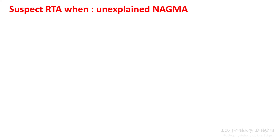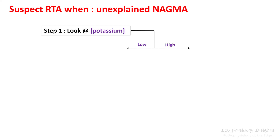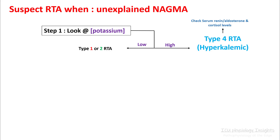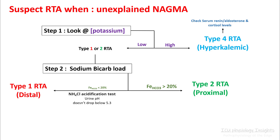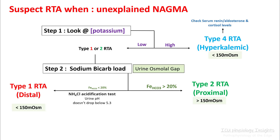Suspect renal tubular acidosis when you have an unexplained non-anion gap metabolic acidosis. Step one is to look at potassium. If potassium is high, you are dealing with hyperkalemic or type 4 RTA — check renin, aldosterone, and cortisol to figure out the cause. If potassium is low, it can be type 1 or type 2. Do a sodium bicarb load and look at fractional excretion of bicarb: more than 20% means type 2 RTA; less than 20% means type 1 RTA. You can confirm type 1 RTA with the ammonium chloride acidification test, where urine pH doesn't drop below 5.3. The urine osmolar gap will be less than 150 in both type 1 and type 4 due to impaired ammonia production, while in type 2 it will be more than 150.